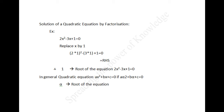In general, a real number alpha is called a root of the quadratic equation Ax squared plus Bx plus C equal to 0, where A is not equal to 0, if A·alpha squared plus B·alpha plus C equal to 0. That is, x equal to alpha is a solution of the quadratic equation, or alpha satisfies the quadratic equation.